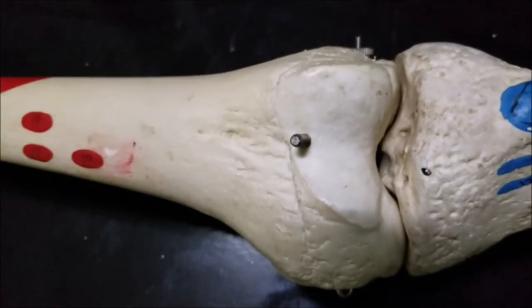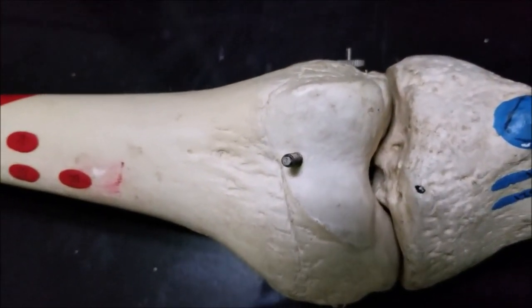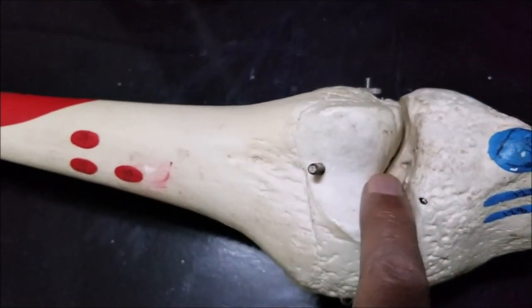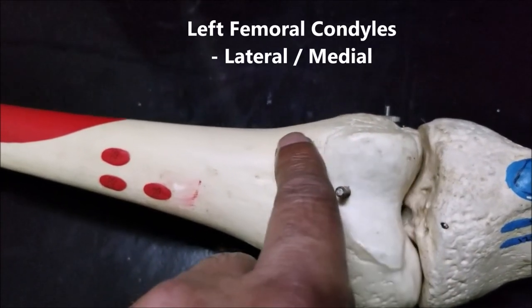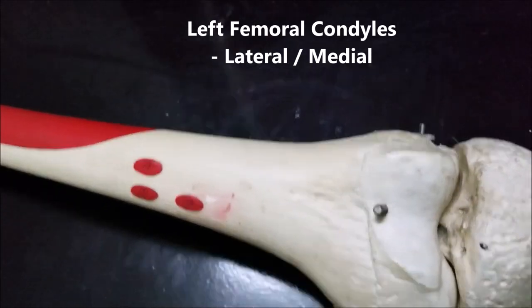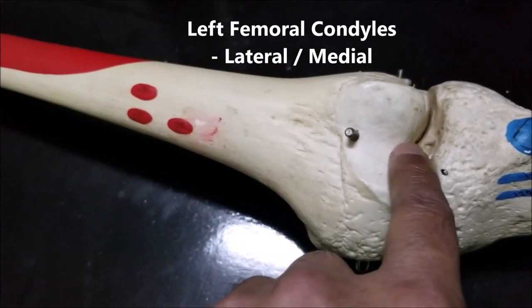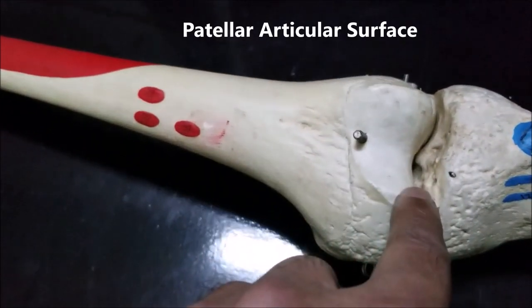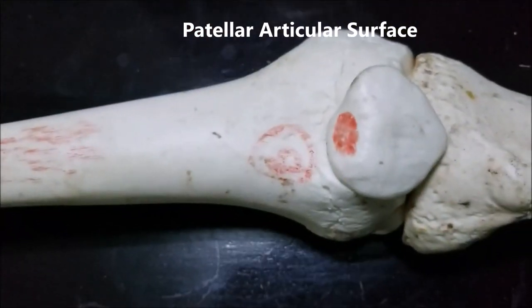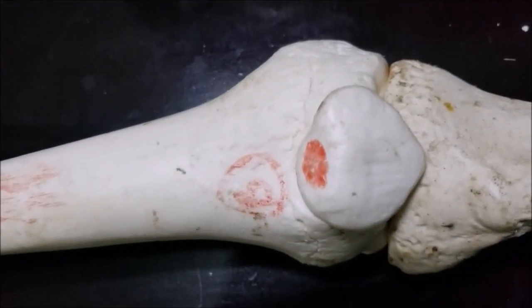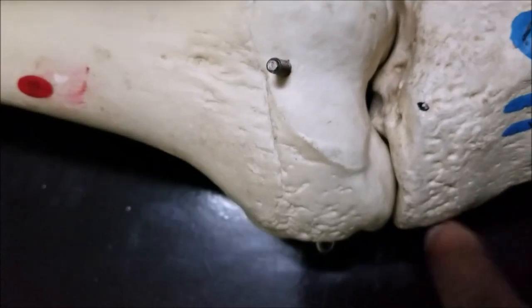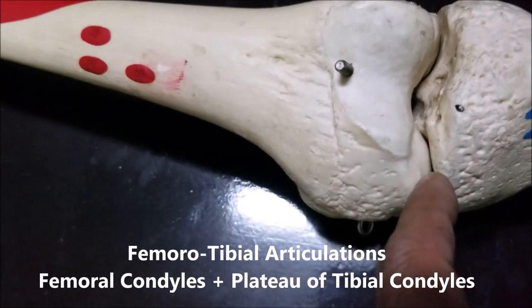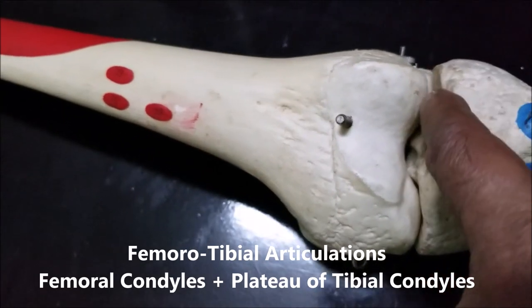First let's take a look at the surfaces which participate. Coming to the left side, we can see this smooth surface here. This is the articular surface of the femoral condyle anteriorly, which articulates with the patella. This is the lateral femoral condyle, this is the medial femoral condyle, and this is the intercondylar fossa — this is the one which fits to the patella. The femoral condyle inferior surface is sitting on the flat plateau of the tibial condyles, and that's what makes the femoral tibial articulation.